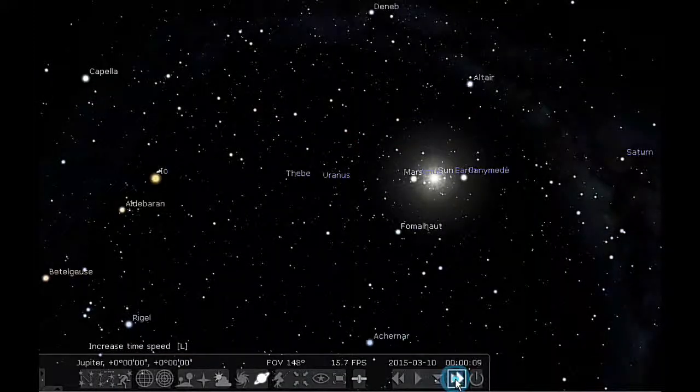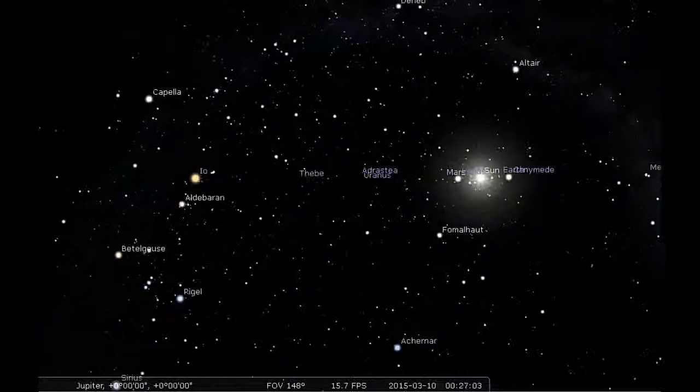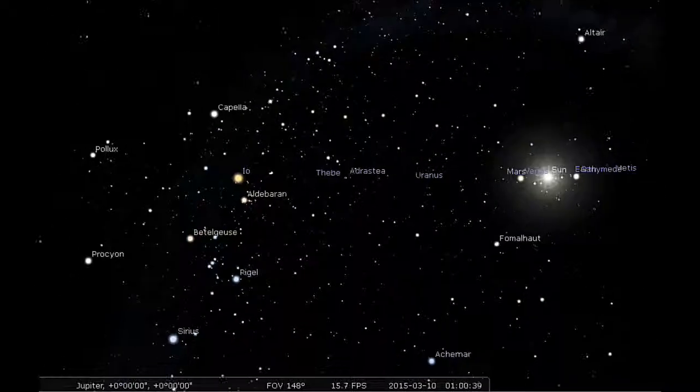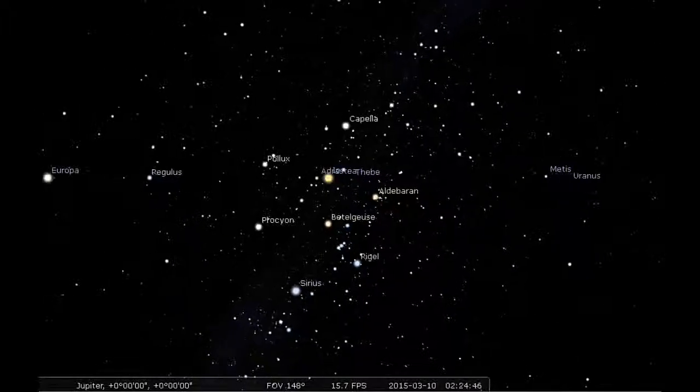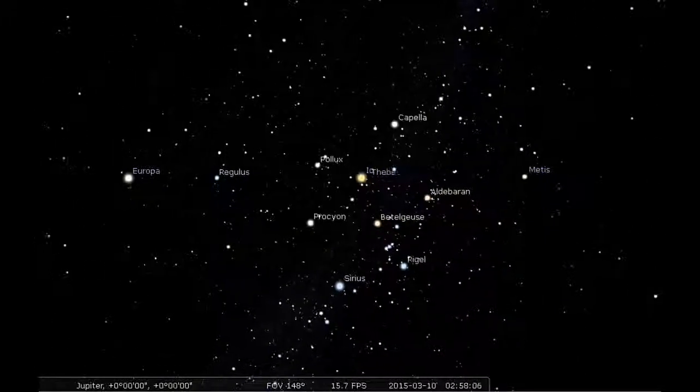24 hours of Jupiter's sky, standing on the equator of Jupiter looking out, seeing what's going to be happening in Jupiter's sky over the next 24 hours.